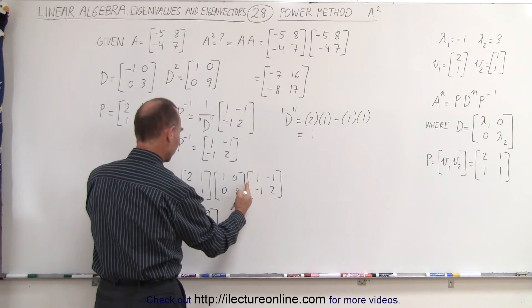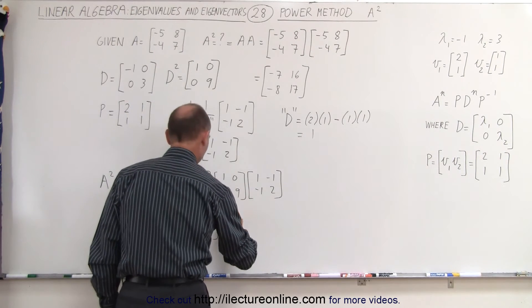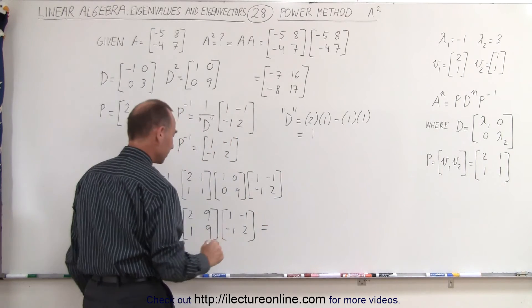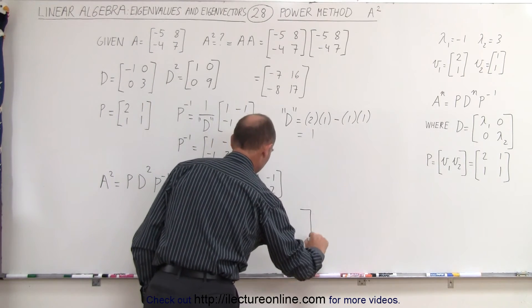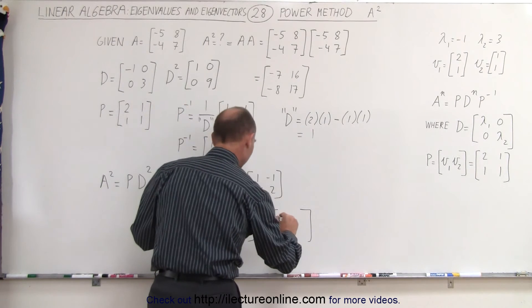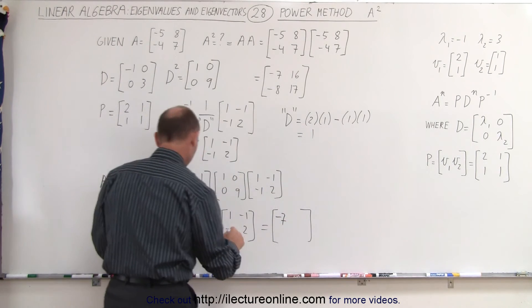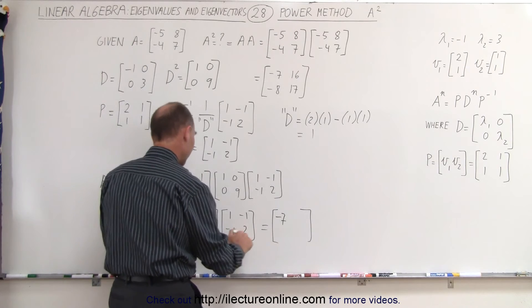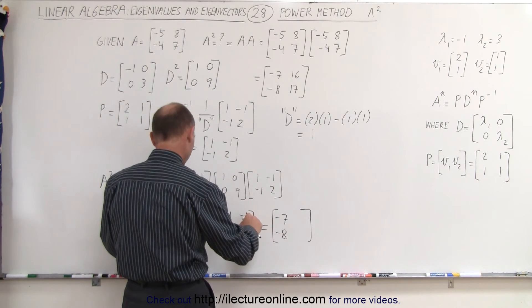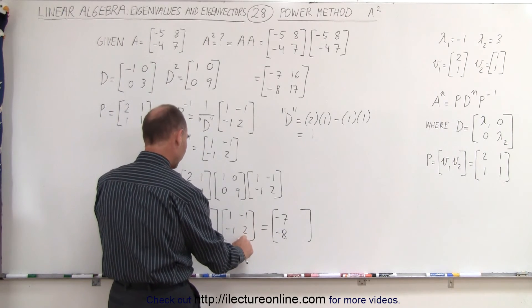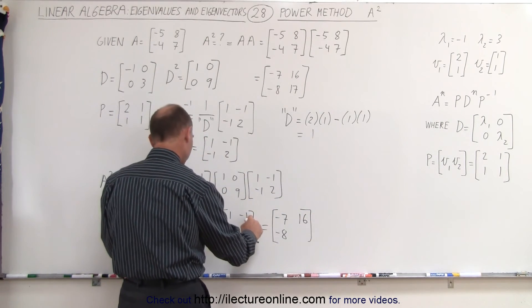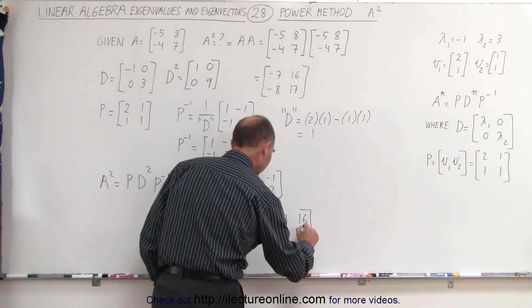So these two matrices multiplied together gives you this, multiplies times this, which is 1, 2, 1, 1, and now we do it one more time. So we have 2 minus 9 is minus 7. We have 1 minus 9 is minus 8. And here we have minus 2 plus 18 is plus 16. And here we have minus 1 plus 18, which is 17.